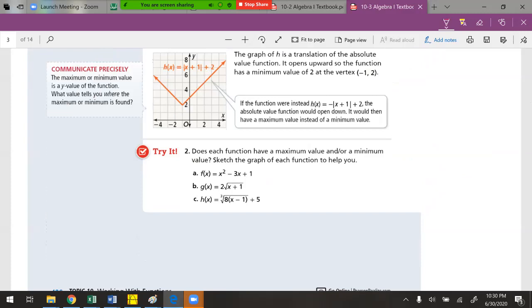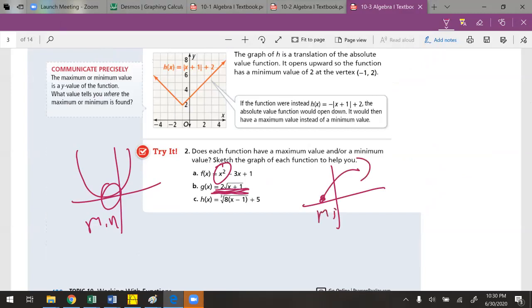For this one right here, does each function have a max or a min? Notice how, right there, it's x squared. This is a quadratic and it's opening upward. There is a minimum. This right here is a square root function. It does this. There is going to be a minimum.